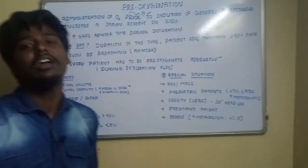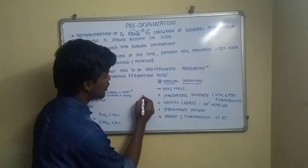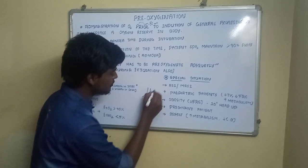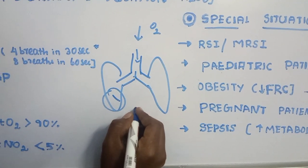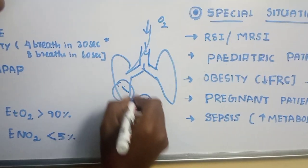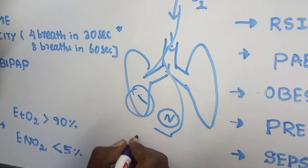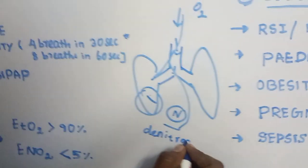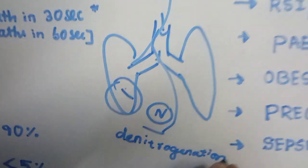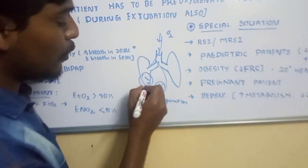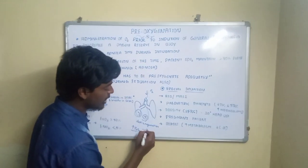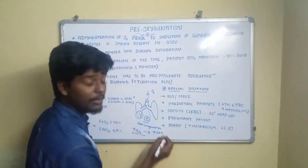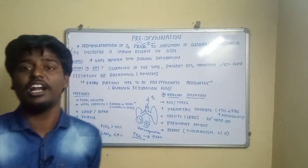What is the mechanism behind pre-oxygenation? When we administer oxygen, the lungs — which normally contain a lot of nitrogen — undergo denitrogenation: the nitrogen is pushed out and replaced with oxygen. This increases the oxygen in the alveoli, increasing the alveolar partial pressure of oxygen, which in turn extends the safe apnea time and helps prevent hypoxia between induction and intubation.